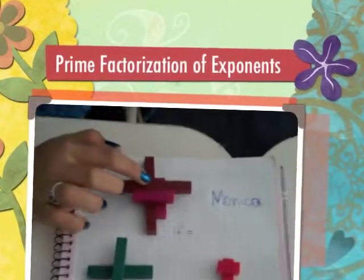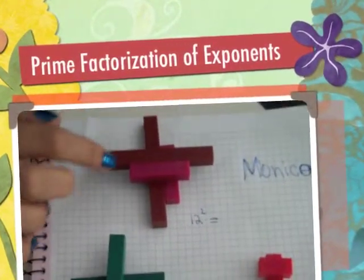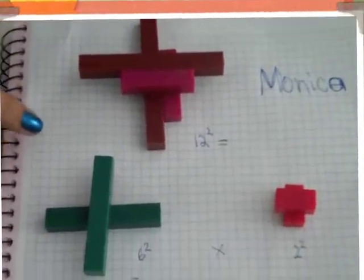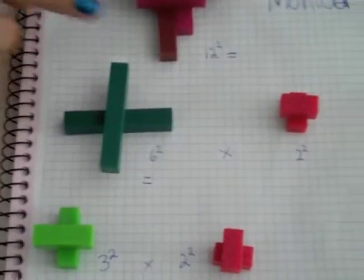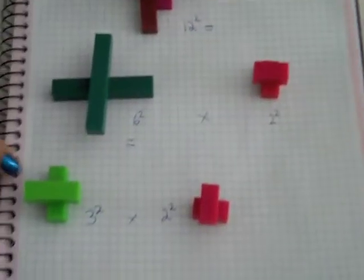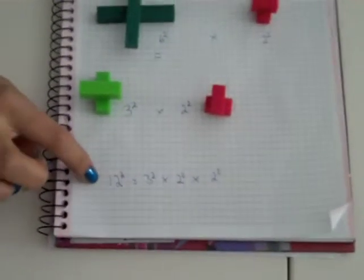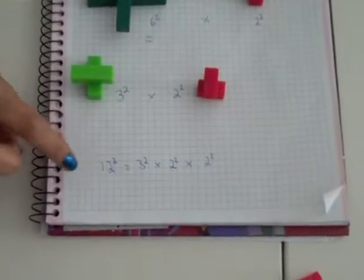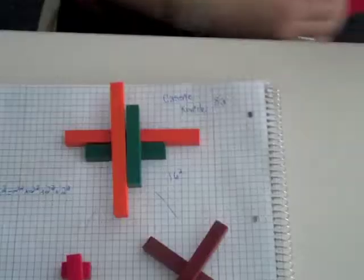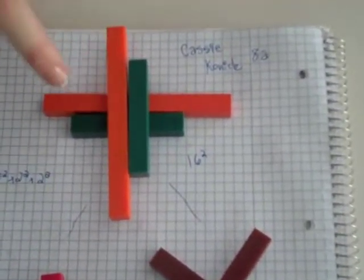So this is 8 and 4, and this is 8 and 4, and you multiply, which makes 12 squared. And 12 squared equals 6 squared times 2 squared. And 6 squared equals 3 squared times 2 squared. Therefore, it gives 12 squared equals 3 squared times 2 squared times 2 squared. So this is 16 times 16,